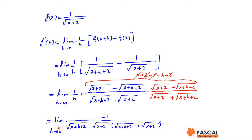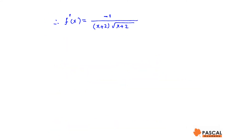When h approaches 0, the limit would be negative 1 over (x+2) times the square root of x plus 2.